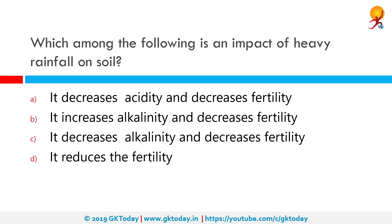Which among the following is an impact of heavy rainfall on soil? The correct answer is that it reduces fertility. Changes in precipitation affect vegetation, which impacts the soil organic matter cycle and the texture of soil. This can influence the runoff rate and formation of surface crust, which affects erosion and causes deterioration.